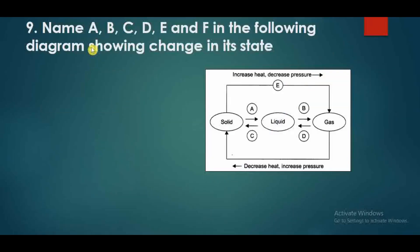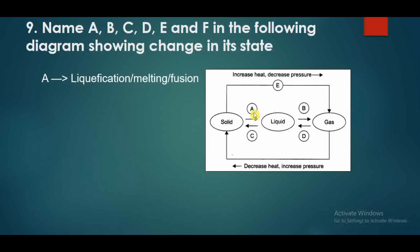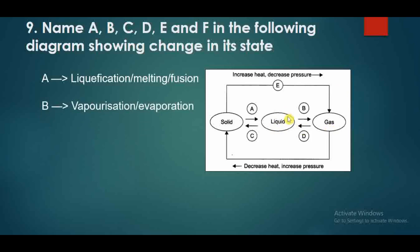Question number 9: name A, B, C, D, E and F in the following diagram showing change of state. So, A is solid to liquid - when a solid is converted to liquid, the process is called melting or fusion. B is liquid to gas - that process is called vaporization or evaporation. C is liquid to solid - that process is called solidification. D is gas to liquid - that process is called condensation.